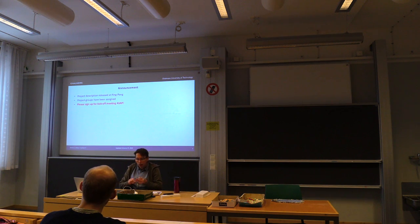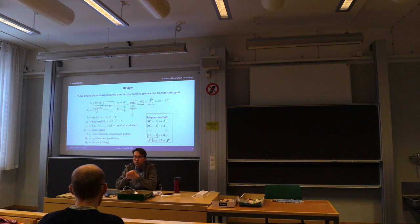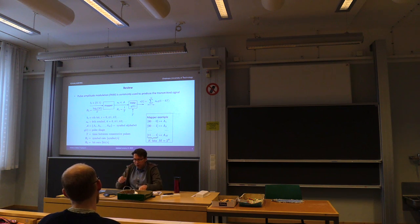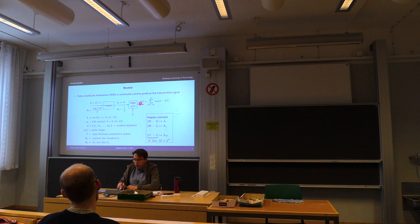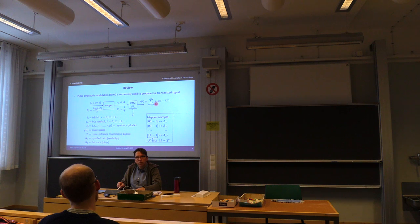All right, so a short review of what we did last time. We're talking about moving bits over a channel. The first thing we need to do is take the bits and produce a transmitted signal. The way we do that in this course is to use a pulse amplitude modulator consisting of a mapper and a pulse amplitude modulation device. It has a basic pulse shape G, takes symbols in, and produces an output signal — a train of pulses where we have the basic pulse G multiplied with amplitude AK. AK is produced by the bits, so we encode the bits in AK and send that over the channel.